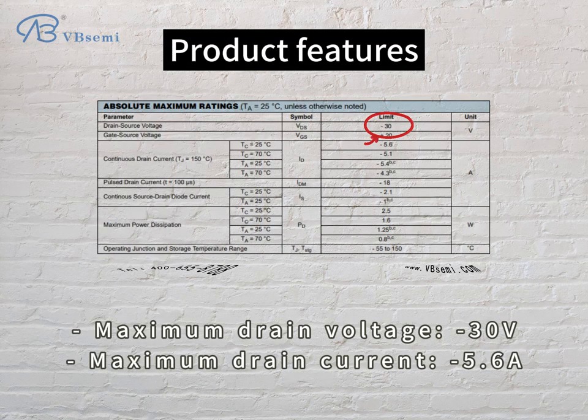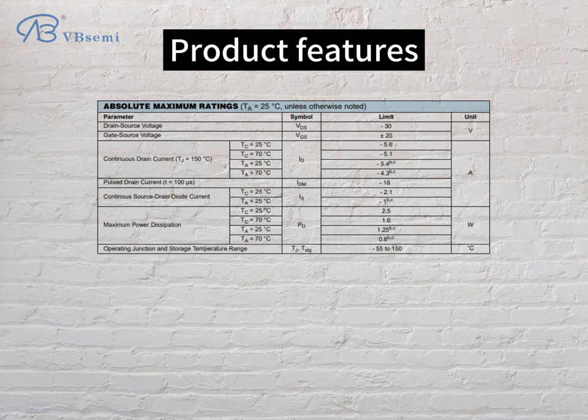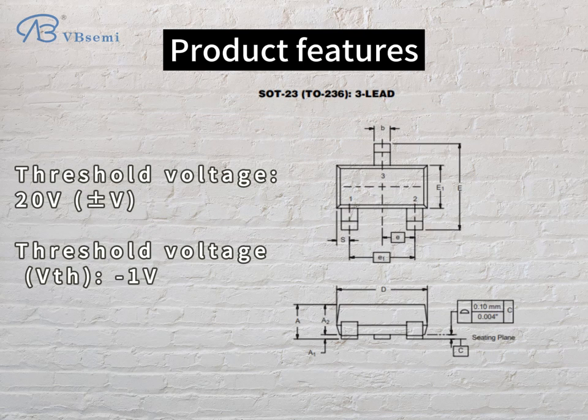Maximum drain voltage: -30V. Maximum drain current: 5.6A. Threshold voltage: 20V. Threshold voltage VTH: -1V.